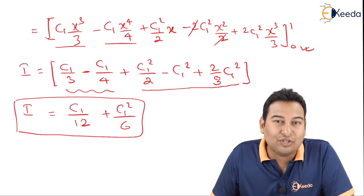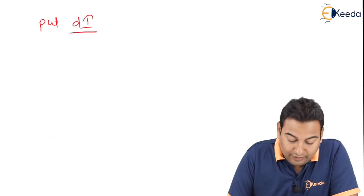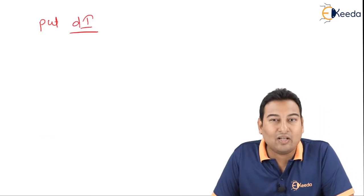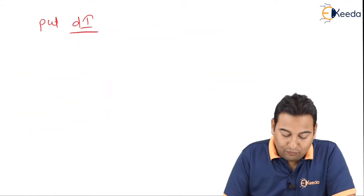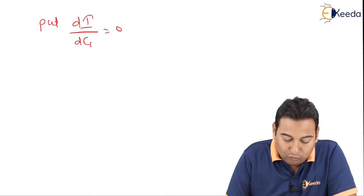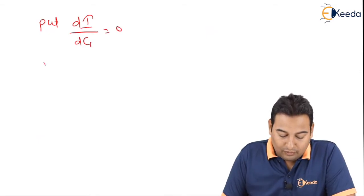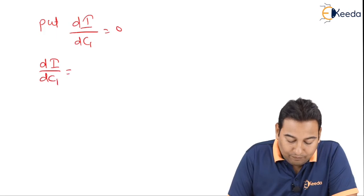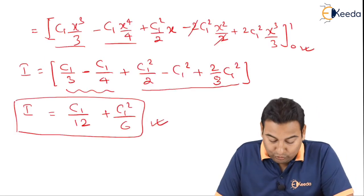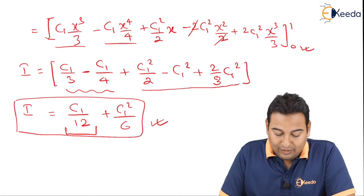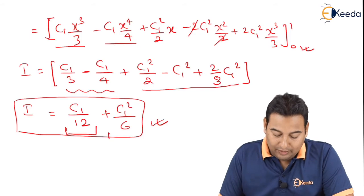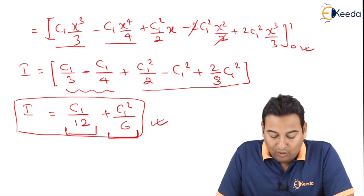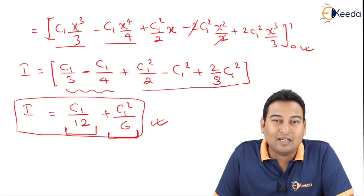Step 4: Set dI/dc1 = 0. The only constant in the problem is c1, so we differentiate with respect to c1 and set equal to zero. Differentiating: d/dc1(c1/12) = 1/12, and d/dc1(c1²/6) = 2c1/6 = c1/3.